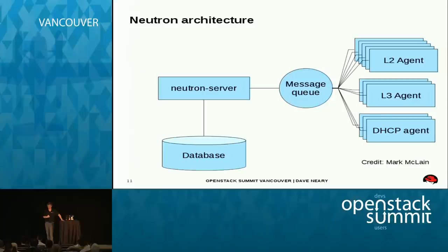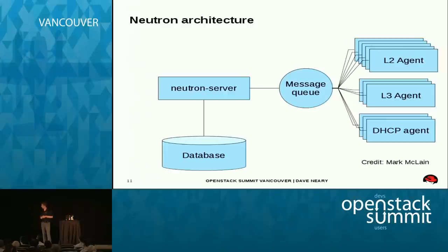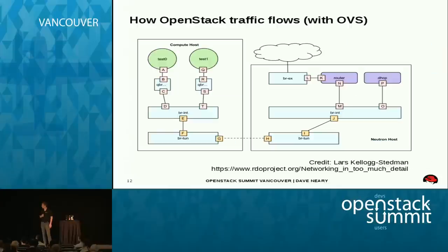The way Neutron does it with the OVS plugin: Neutron server receives an API call and sends out a message to the queue. You've got one L2 agent — the Open vSwitch agent — on each compute node, which manages the flow table on your Open vSwitch instance. We have an L3 agent per router that's created, and a DHCP agent per subnet. Neutron passes on the request via the agents, gets an OK, and records the change of state of the network in the Neutron database. There's a potential bottleneck around the message queue and the scaling issue of L2 agents coordinating across multiple hosts.